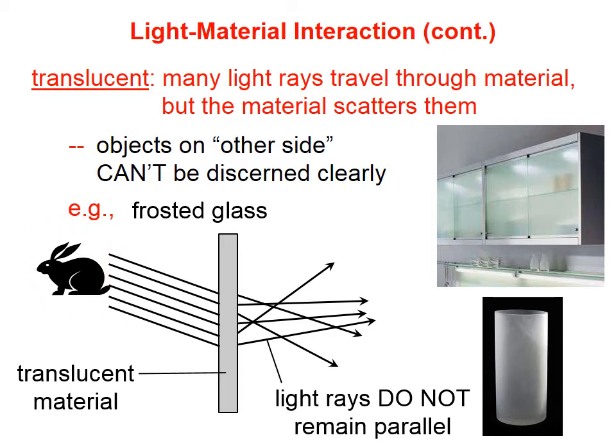We might be able to tell it's a rabbit, but the edges are fuzzy — it doesn't have sharp focus. Frosted glass is a great example of a translucent material.